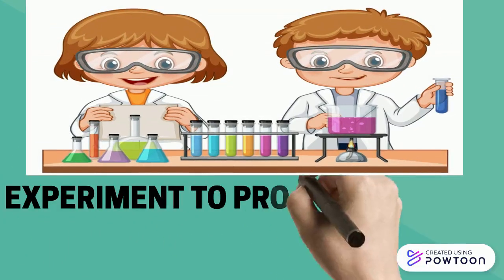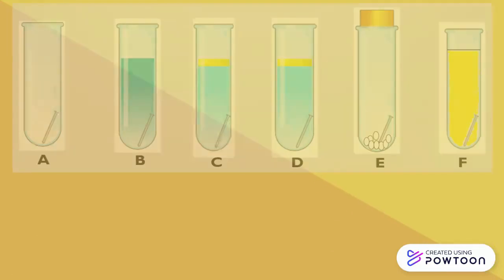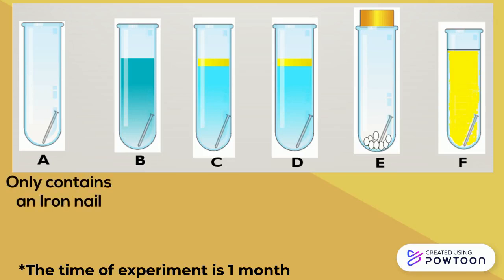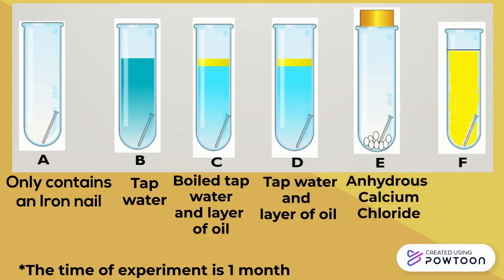Let's look at this experiment to learn more about it. There are six test tubes, each with an iron nail inside of it. Test tube A only contains an iron nail. Test tube B is filled with tap water. Test tube C is filled with boiled tap water with a layer of oil on top of it. Test tube D is filled with tap water with also a layer of oil on top of it. Test tube E is filled with anhydrous calcium chloride, and test tube F is filled with cooking oil.